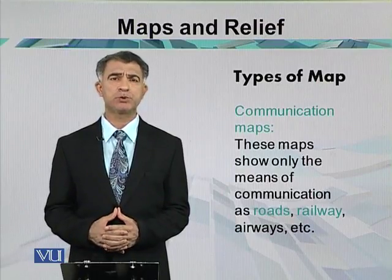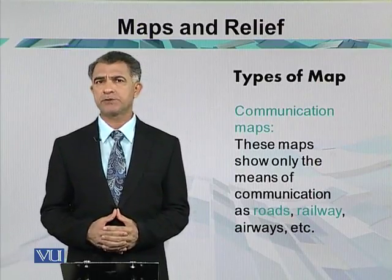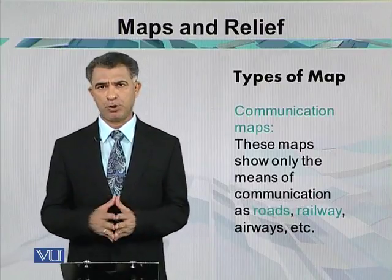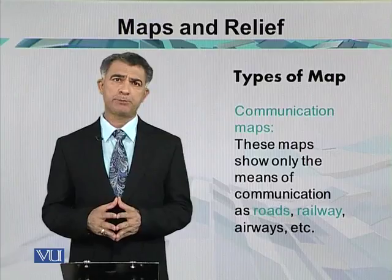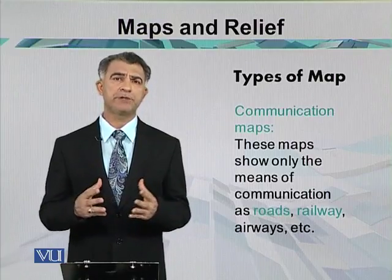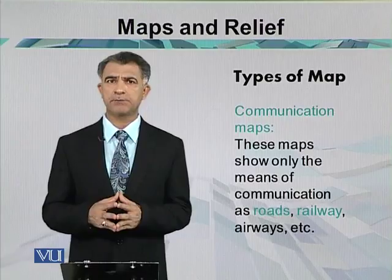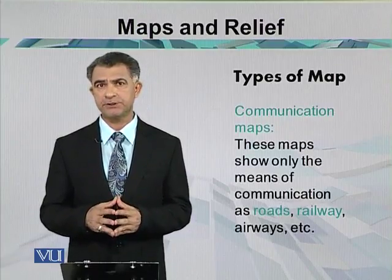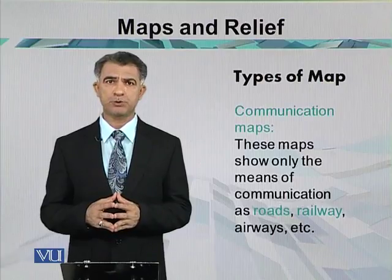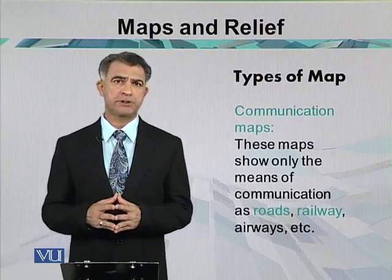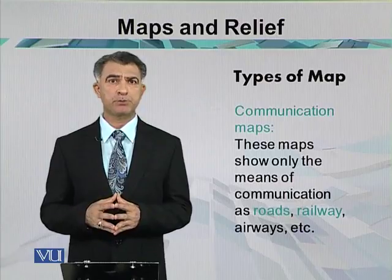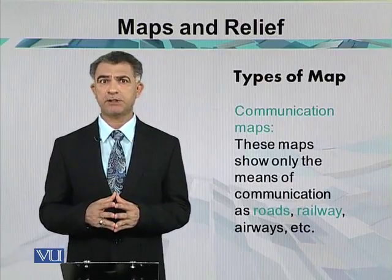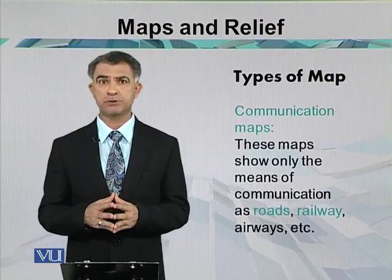The next category of map is called the communication map. These maps are important to show the communication networks of a country, region, or the world. For example, in Pakistan we have major roads or highways which are important for communication and transportation. These maps can show major roads of the country, and are important for travelers and tourists.